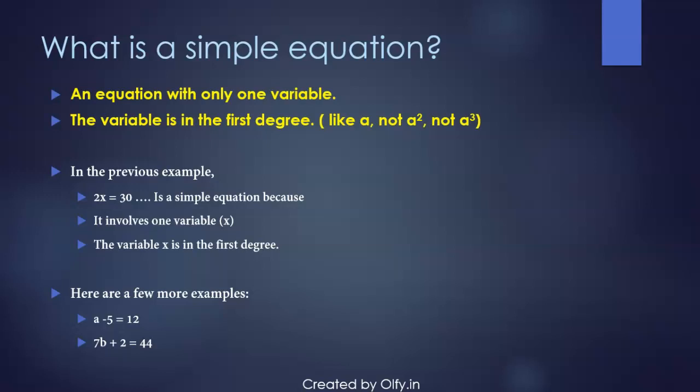So in the previous example we saw, 2x equals 30, it is a simple equation because it involves only one variable, one unknown, that is x, and the variable is in the first degree as well.